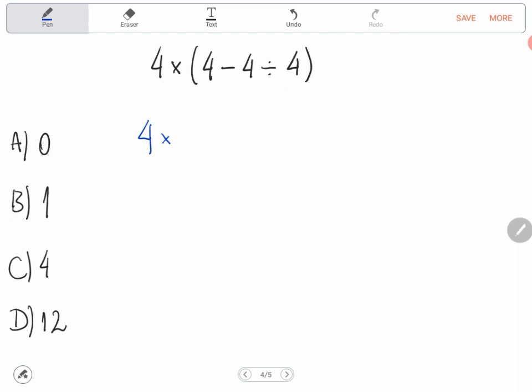Then we repeat this number 4, minus 4 divided by 4 is 1. Alright, then we need to solve what we have here in the parentheses. 4 times 4 minus 1 is 3.